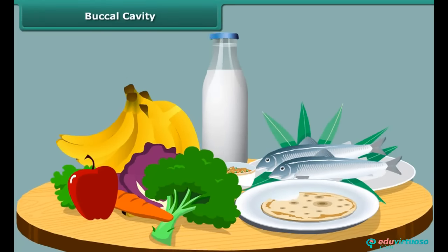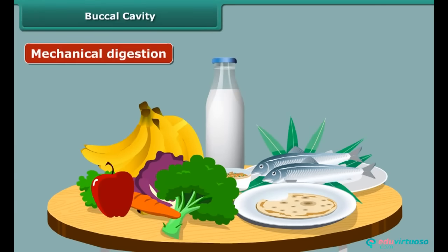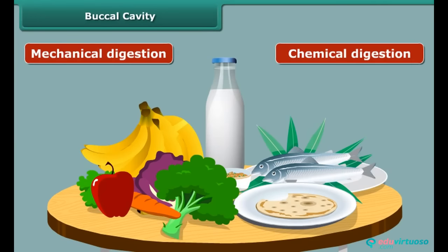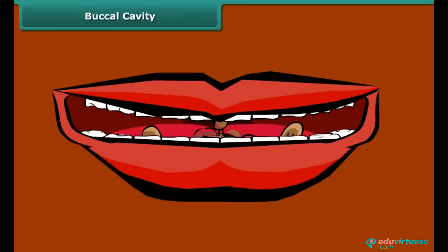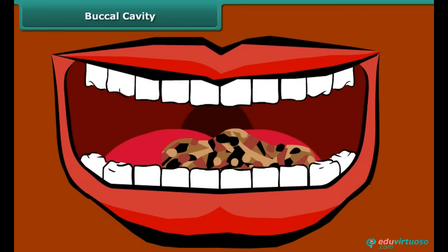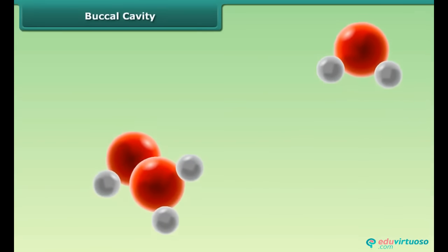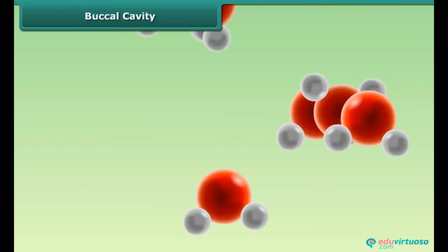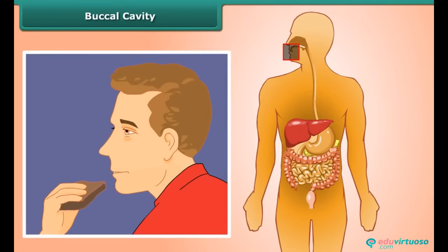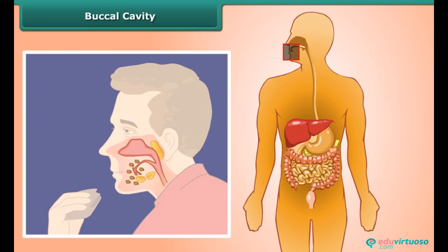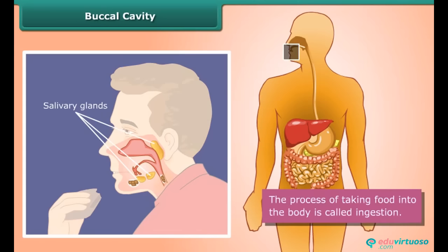Breaking down of food occurs by two ways: mechanical digestion and chemical digestion. Chemical digestion is the chemical breakdown of food into molecules the body can absorb. Both types of digestion take place in the mouth. Mechanical digestion breaks food into smaller pieces, and saliva produced by salivary glands causes the breakdown of starches into sugars. This process of taking food into the body is called ingestion.